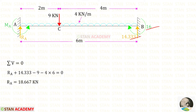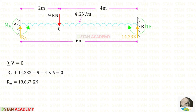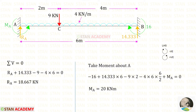We have found Mb and Rb. Now let us apply sigma V equals zero to find Ra. Ra and Rb are acting upwards so both are positive. Both loads are acting downwards so they are negative. For the UDL we multiply by the distance. Finally, for Ra we get 18.667 kilo newton.